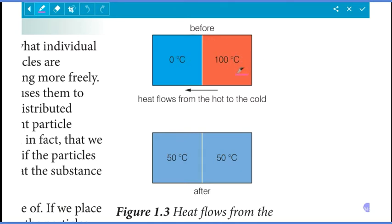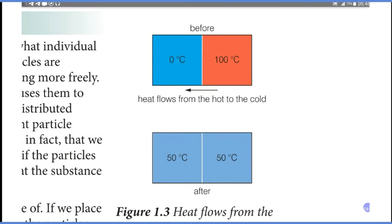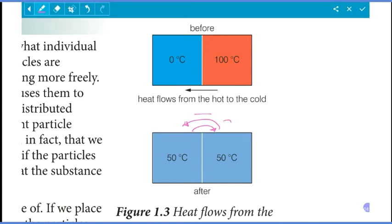We have a heat flow from warmer water at 0 degrees Celsius to a colder body. We have a heat transfer here, and a temperature of 150 degrees Celsius here. After transfer, we have thermal equilibrium. Because they are thermally in equilibrium, there is no further net heat transfer.